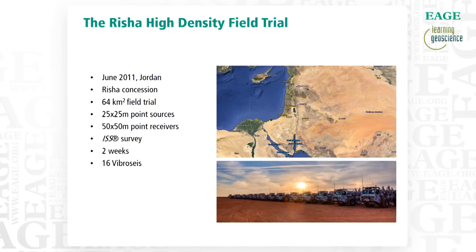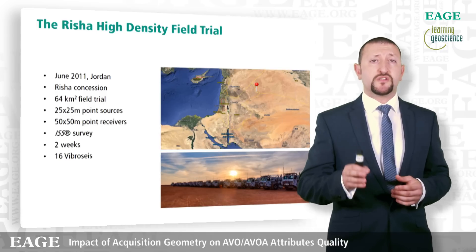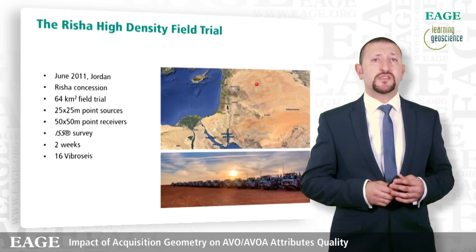Let me introduce you to the Risha Ultra High Density Field Trial used in this study. It was acquired in 2011 in Jordan over the Risha concession, covering an area of roughly 64 square kilometers using a 25 by 25 meter shot grid, shooting over a 50 by 50 meter point receiver grid. This is indeed a very dense survey.